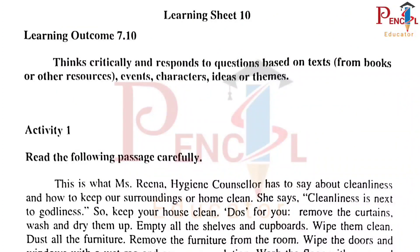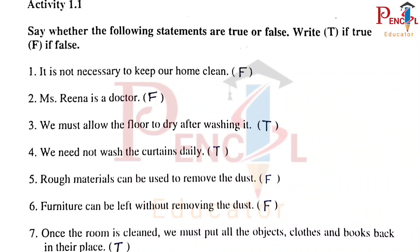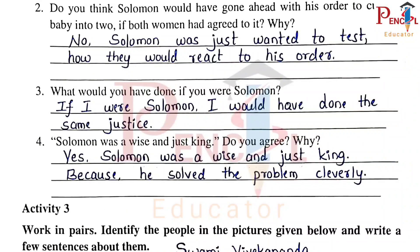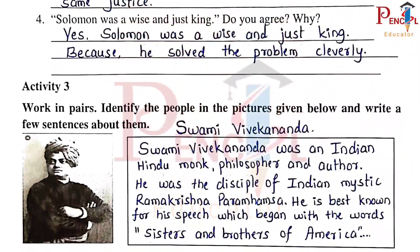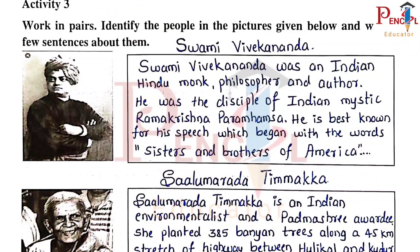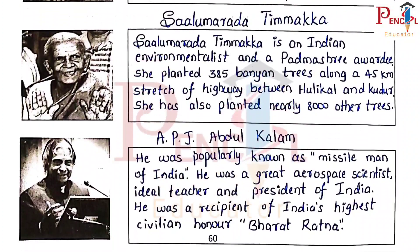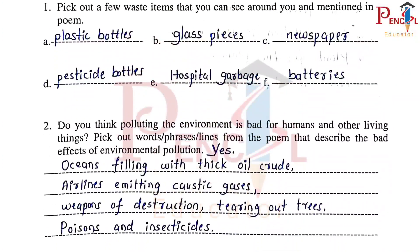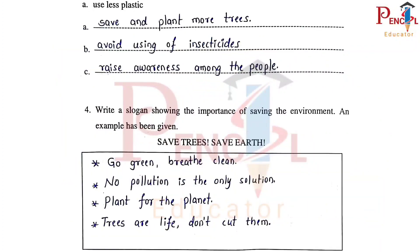Learning Sheet 10. Activity 1.1, Activity 2.1, Activity 3.1. Activity 4.1 — Save and Plant More Trees, Go Green, Breathe Clean, Plant for the Planet, Trees Are Life, Don't Cut Them.